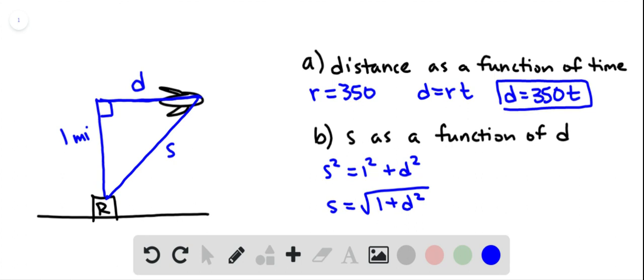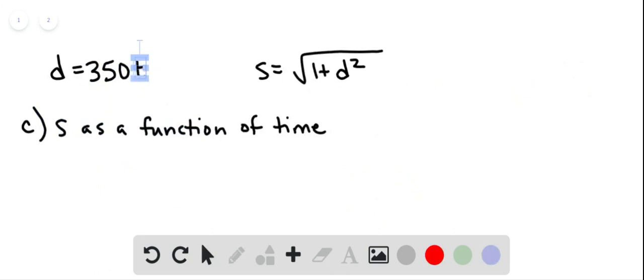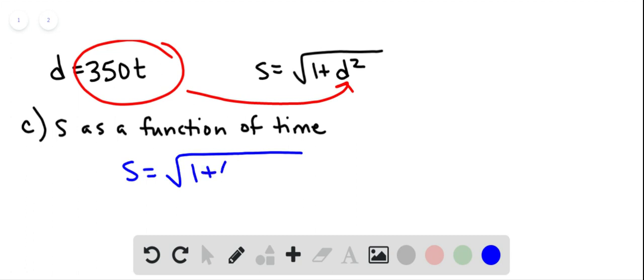And finally for part c, we want to find s as a function of time by finding the composition of these two functions we just found. So we're going to put the d function inside the s function. So that's going to give us s equals the square root of 1 plus 350t squared.